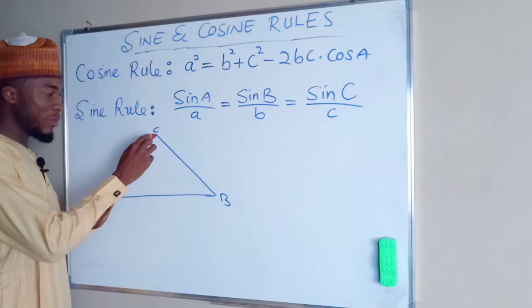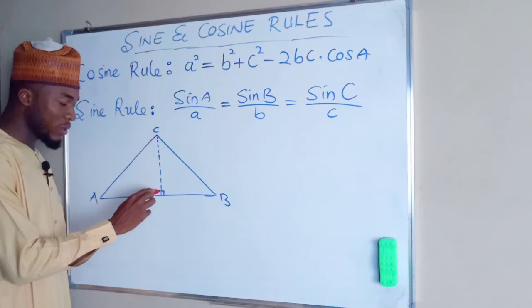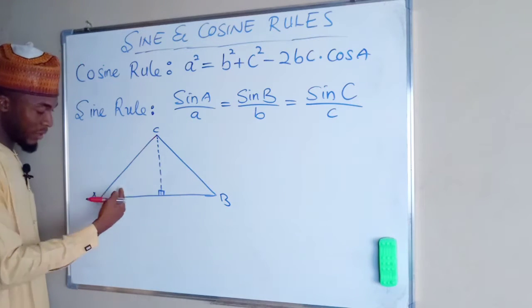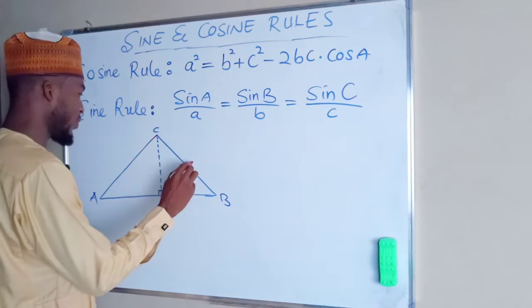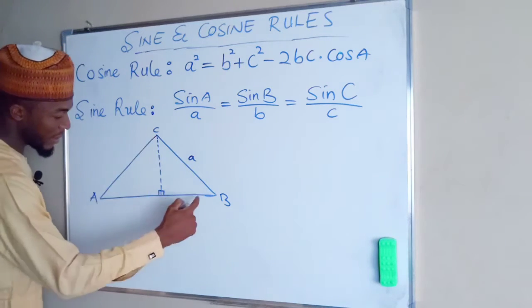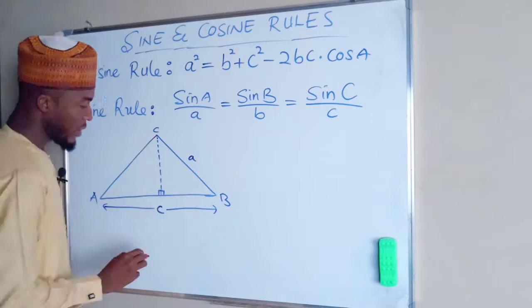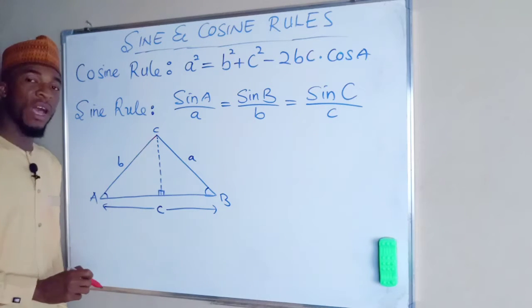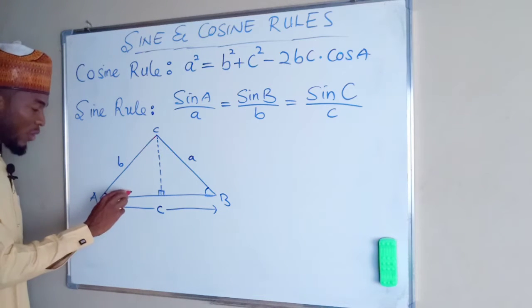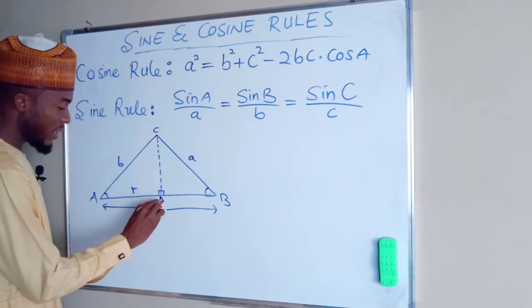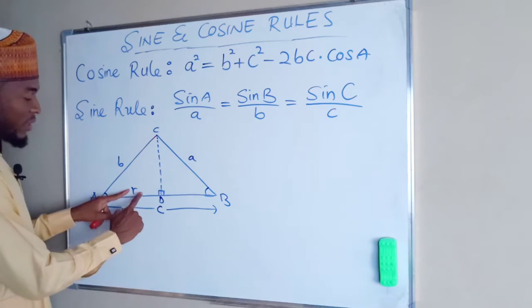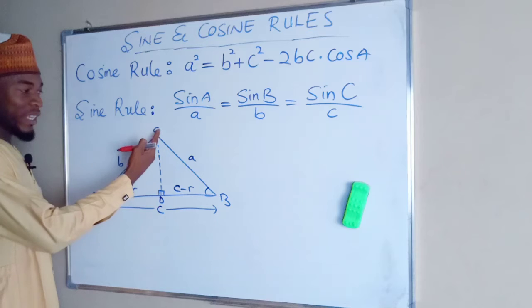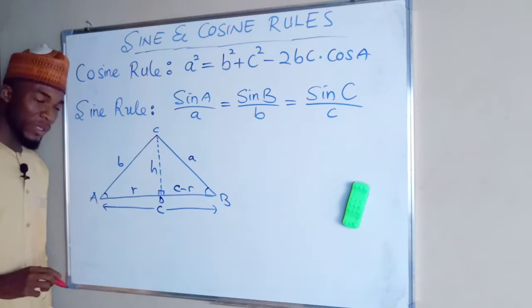First, we have a triangle. We are going to draw a line from C perpendicular to line AB, forming two right-angle triangles. The corresponding side length to an angle will be represented by a lowercase letter: this side is lowercase a, this side is lowercase c, and this side is lowercase b. These two angles are acute. If I call this side length R, let me call this point D — so AD equals R and DB equals c minus R. Let us call the length CD as H, which is the height of this triangle.